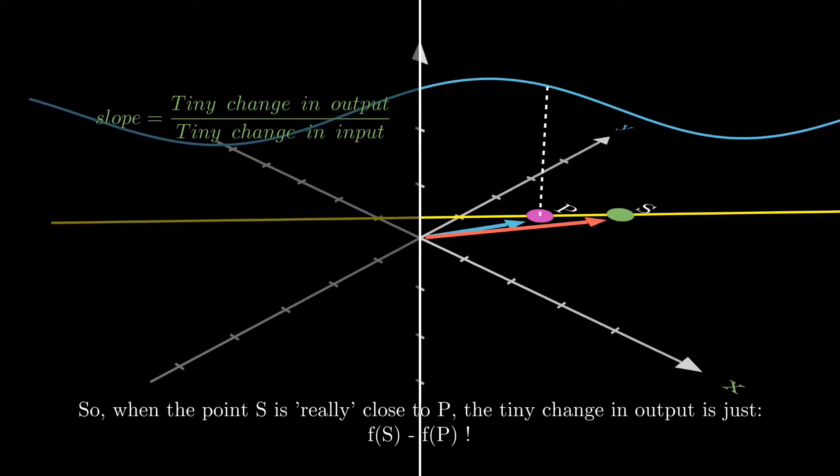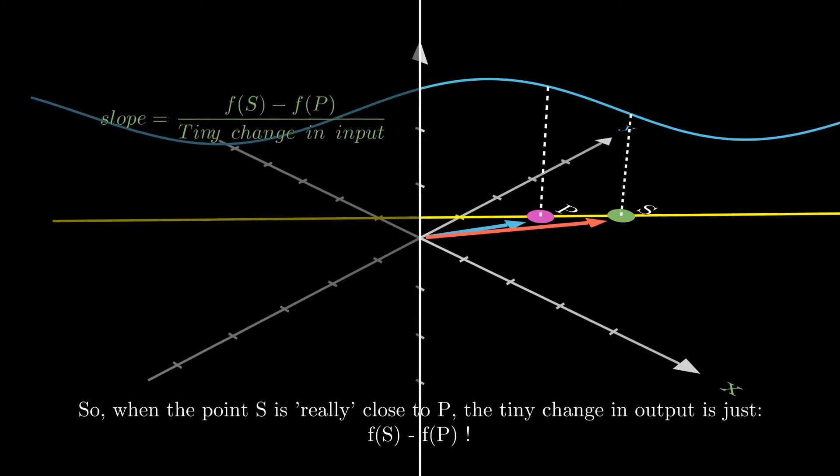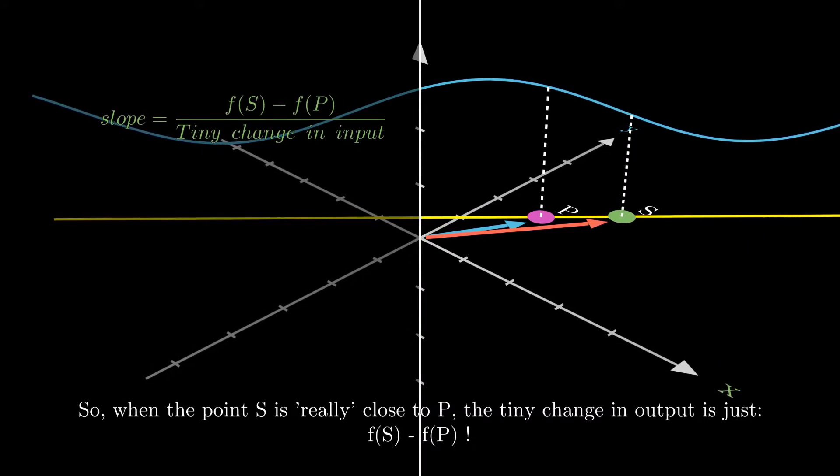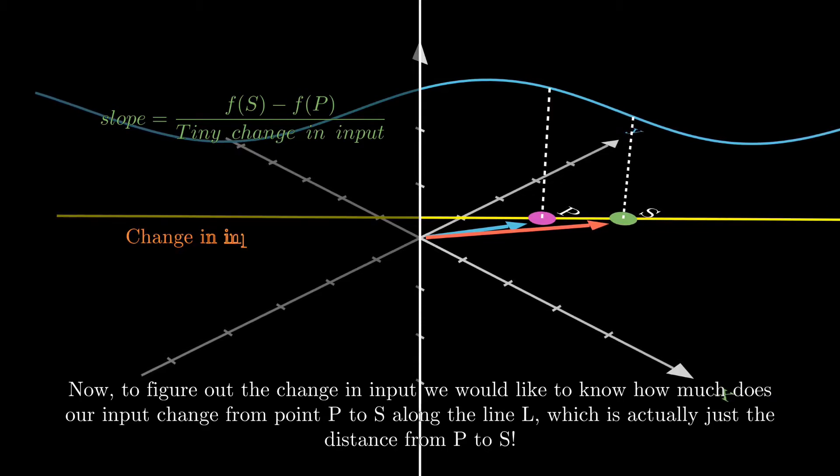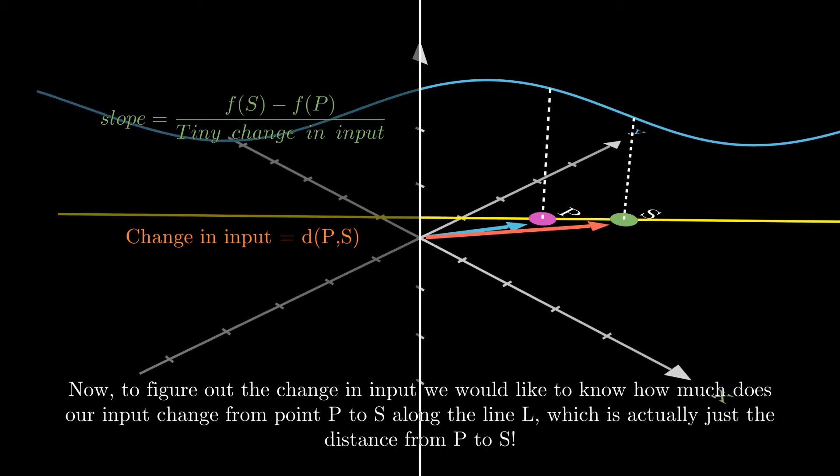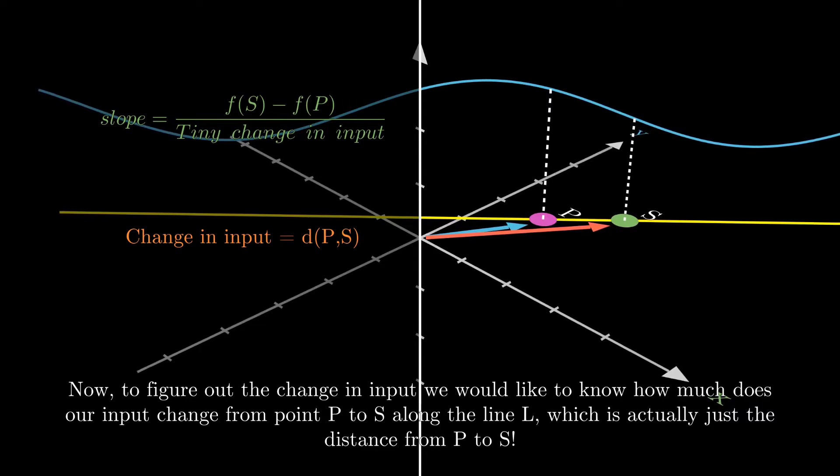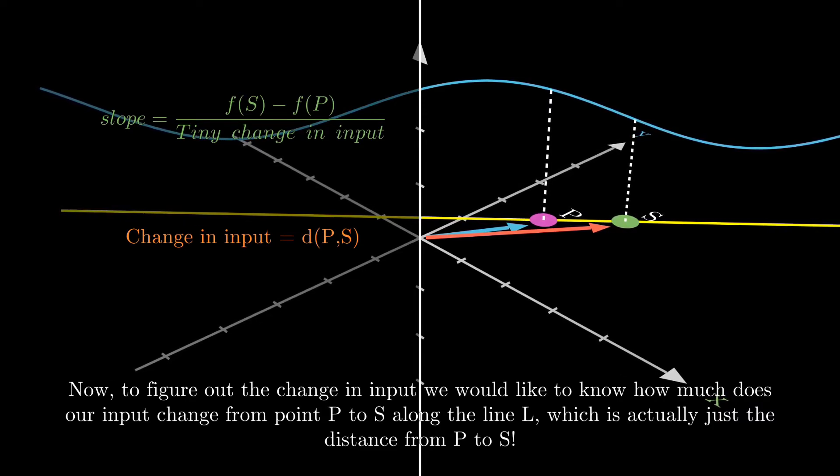So when the point S is really close to the point P, the tiny change in the output is just F of S minus F of P. Now, to figure out the change in input, we would like to know how much does our input change from P to S along the line L. Actually, it's just the distance from P to S.